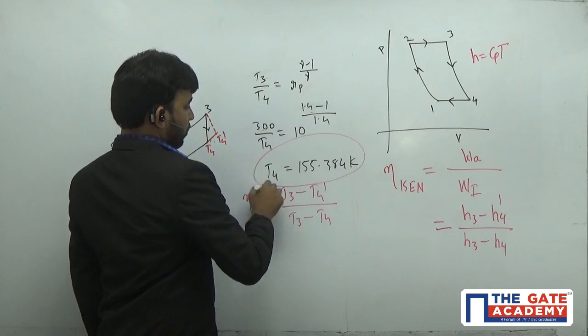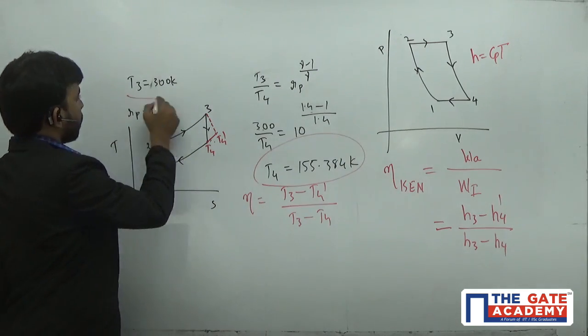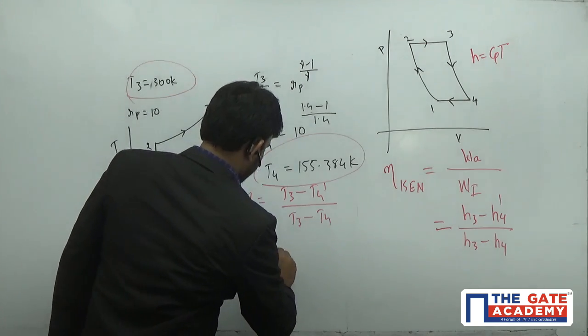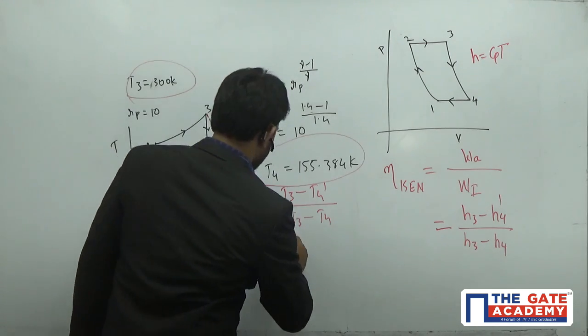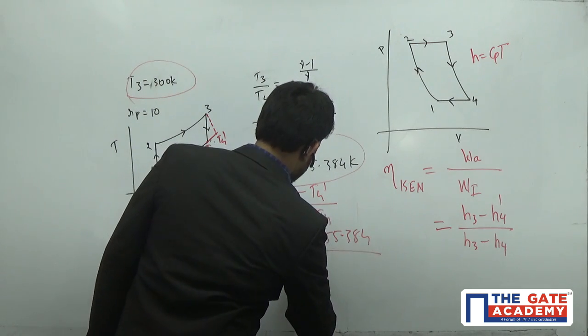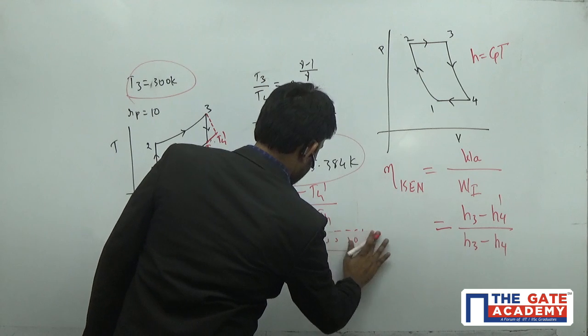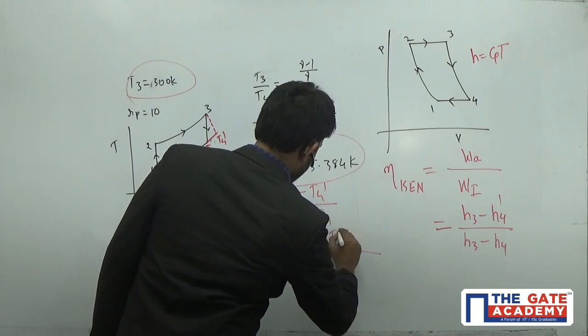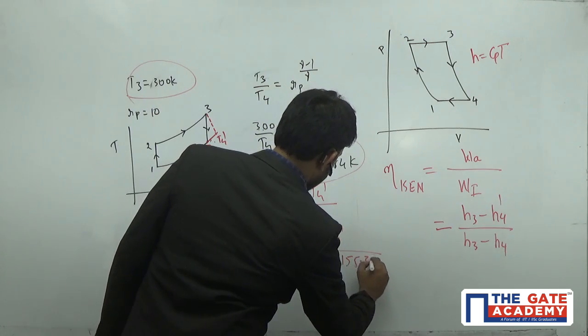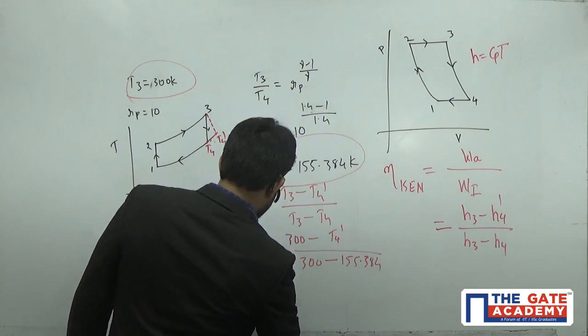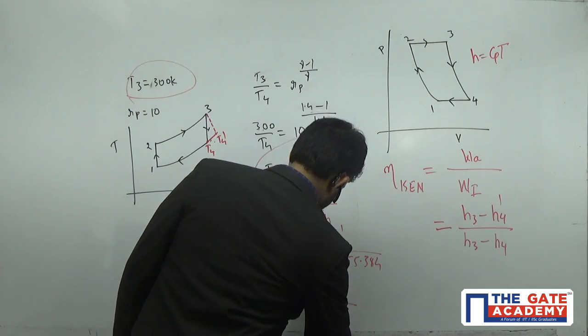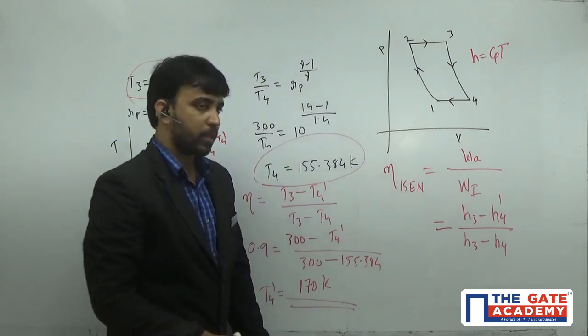You know what is T4. T4 is already known. T3 is given in the question. Isentropic efficiency is given in the question. This is 90 percent, 0.9, equals T3, 300, minus T4 dash, divided by 300 minus 155.384. From here I can get the value of T4 dash. If you simplify this, you will get T4 dash as 170 Kelvin.